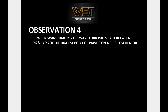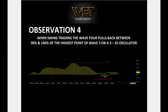Observation four: when swing trading, the wave four pulls back between 90% and 140% of the highest point of wave three on a 5-35 oscillator. The oscillator is based on the cross-section of the 5 and 35-day moving averages — those moving averages move apart and come back together. On the wave four pullback, you can see the oscillator cross the zero line from wave three, then pull back and crown between the 90% and 140% levels. The 5-35 oscillator is part of the indicator suite and we'll go through examples using it.